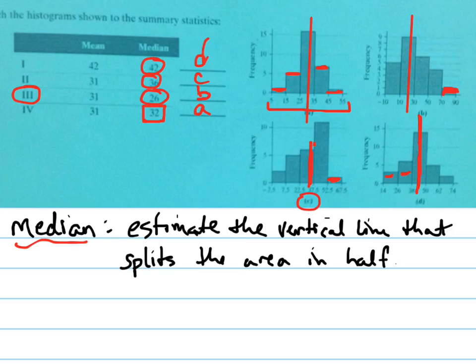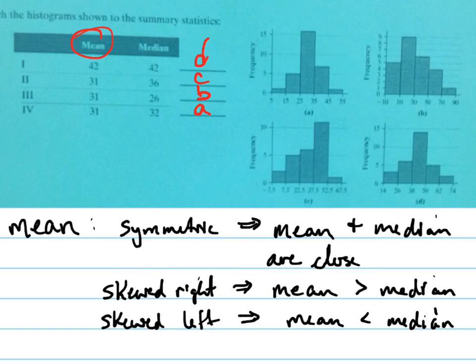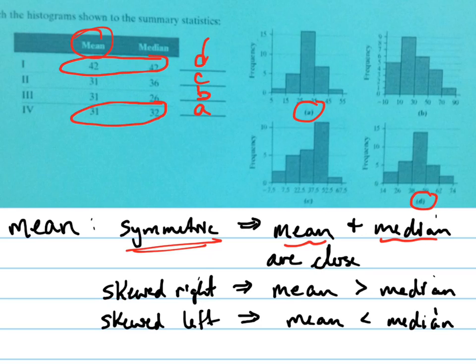Let's talk about mean, because we didn't really have to use the mean to narrow down these graphs. But there is a nice tell regarding the mean, and here it is. If the graph is symmetric, like A and D, then the mean and median are close to each other. Let's take a look. A, 31 and 32, and D, 42 and 42. They're very close to each other, if not exactly the same.